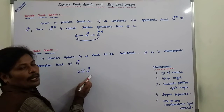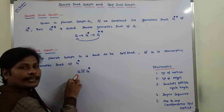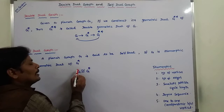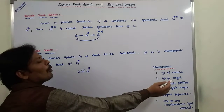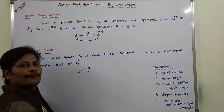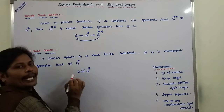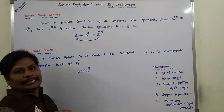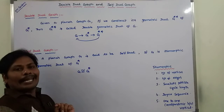For isomorphism between G and G star, we consider the following factors. First, the number of vertices: the number of vertices in G must equal the number of vertices in G star. Second, the number of edges: the number of edges in G must equal the number of edges in G star. Third, smallest possible cycle length: the smallest possible cycle length in G must equal the smallest possible cycle length in G star.